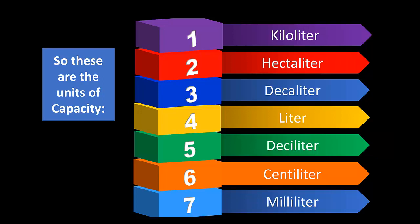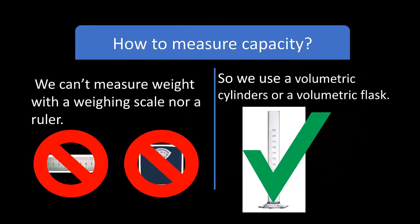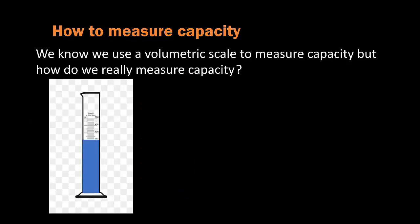Now let's see what gadget we use to measure capacity. We can't use a weighing scale or a ruler, so that's why we use a volumetric cylinder or volumetric flask. Over here we have a volumetric cylinder with some water in it.